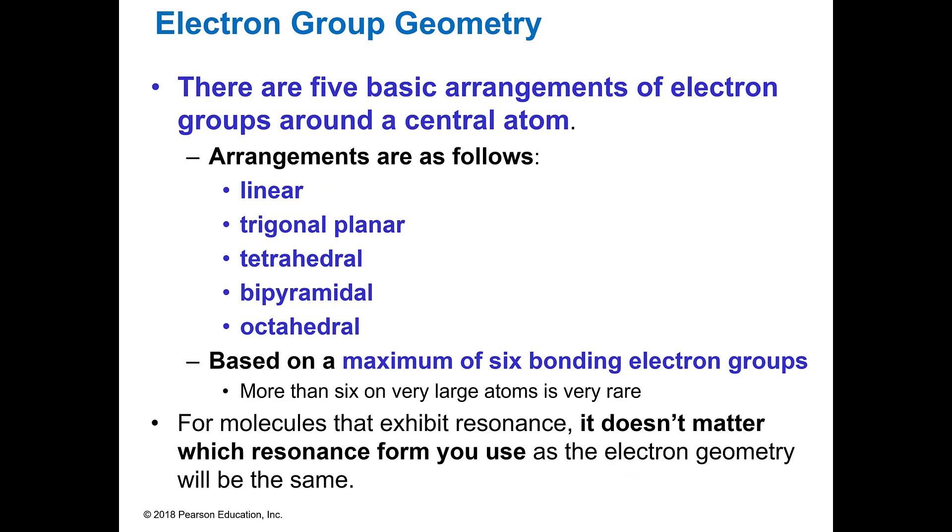And that's all you have to know to know the electronic geometry. There are five of these: linear, trigonal planar, tetrahedral, bipyramidal, and octahedral. And they're based on a maximum of six bonding electron groups around the central atom. Now there can be more than that, but it's super rare. So we're just looking at what normal is.